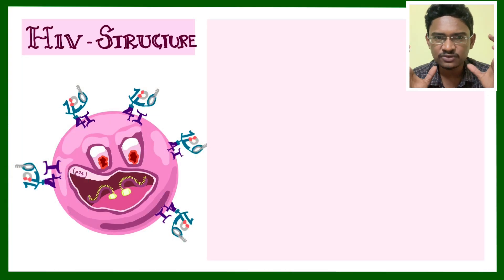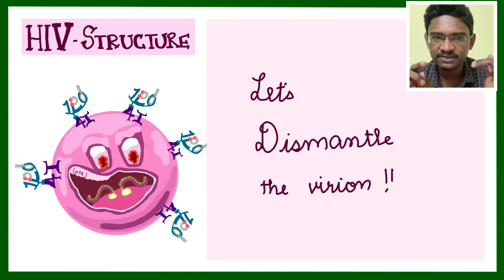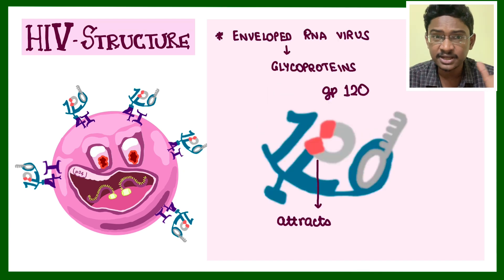First, let's know the structure of this tiny cartoon, which is the HIV virion. Let's start dismantling the virion one by one. HIV is an enveloped virus and it's an RNA virus. In the envelope, there are lots of glycoproteins studded.